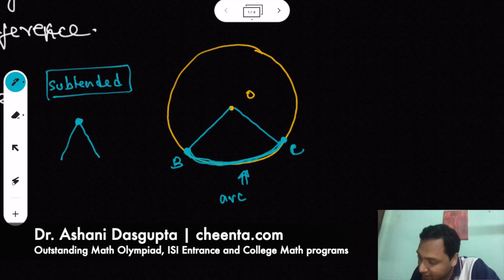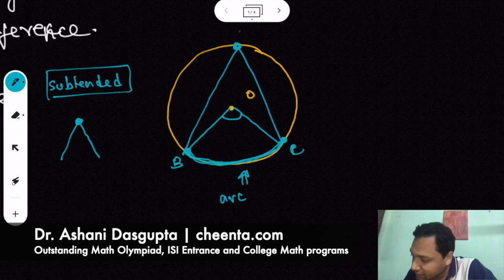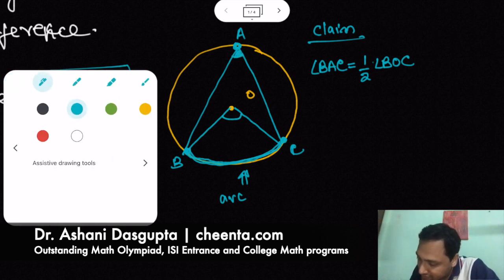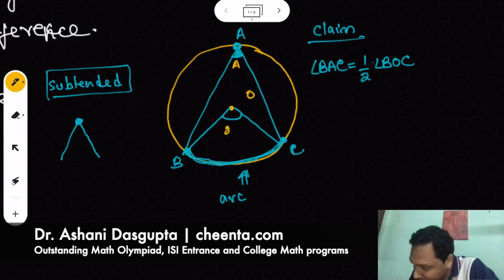So the angle subtended by this arc at the center - so the tip of the angle is at the center - is twice the angle subtended by the same arc at the circumference. So this is suppose A. So angle BAC is half of angle BOC. This is the claim. If this angle, let's call the value of it also A, then this is twice of A.